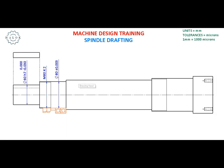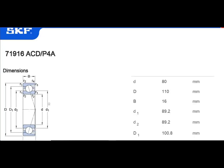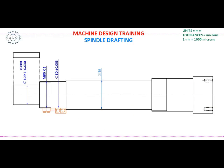Coming to this stepped area, there is a critical value to keep in mind: the diameter of this step should always be more than the OD of the inner race of the bearing. The bearing will have an inner race and an outer race, so the step diameter must always exceed the bearing inner race OD. You can see how I have selected 89 mm for this step.